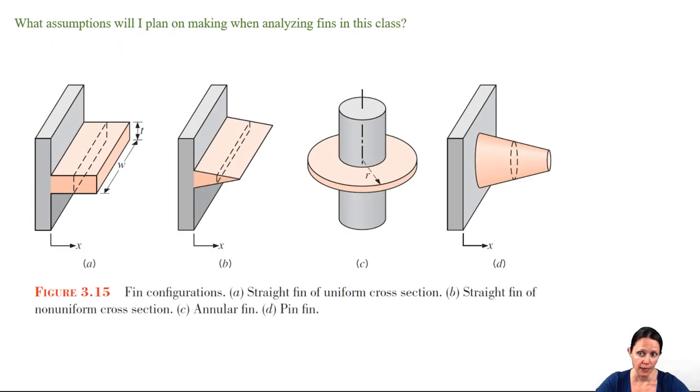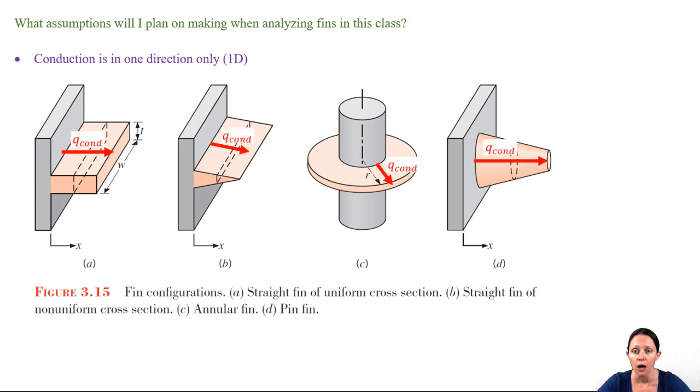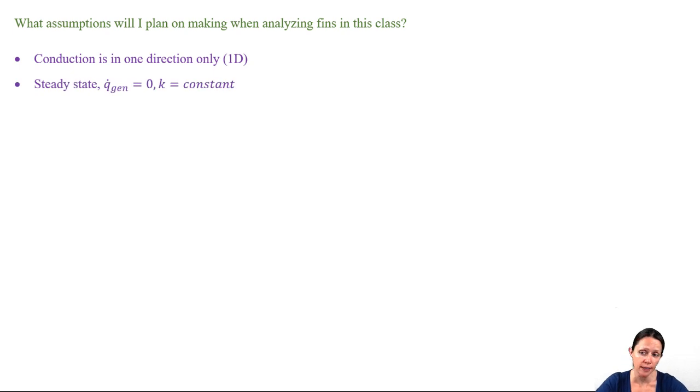So what assumptions do we typically make? First we assume that the heat transfer is one-dimensional along the length of the fin. In other words, we're assuming that the temperature gradient is only in one direction. We also make the assumption that these fins are removing heat in a steady-state process. There's no heat generation and the material is isotropic, meaning that K is constant.